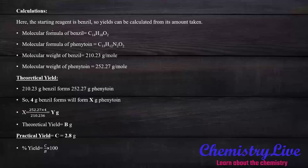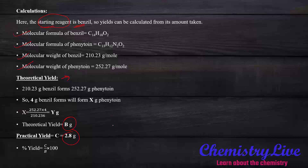In the calculation section, the starting reagent is benzil with a molecular weight of 210.23 grams per mole, and phenytoin has a molecular weight of 252.27 grams per mole. In the theoretical yield section: 210 grams of benzil converts to 252 grams of phenytoin. For 4 grams of benzil, we calculate the theoretical yield of phenytoin. Dividing the practical yield by the theoretical yield and multiplying by 100 gives the percentage yield, which is a very important part of the experiment.